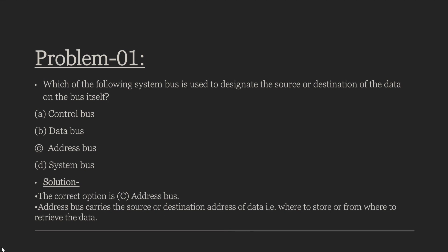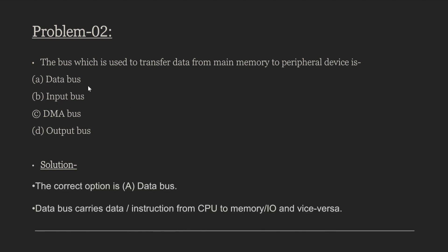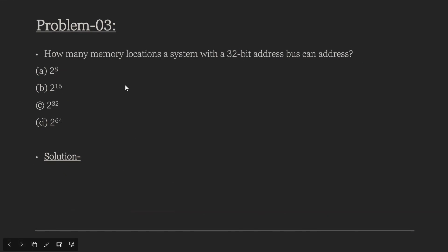Next problem: the bus used to transfer data from main memory to a peripheral device. When data is transferred from memory to a peripheral device, the data flows — the correct answer is: the data bus carries data or instructions from the CPU to memory, I/O devices, and vice versa. The data bus is used for data transfer.